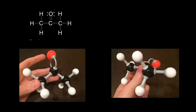On the left is the Lewis dot structure for acetone, and we could turn that into a bond line structure really quickly. Here is the bond line structure for acetone. I could put in lone pairs of electrons on the oxygen, or leave them off - I'll go ahead and put those lone pairs in.